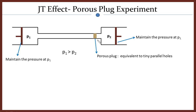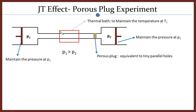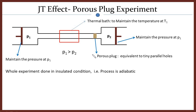Another requirement for this experiment is that we need to maintain the temperature of the gas in compartment 1. Let us assume that temperature is maintained at T1 with the help of a thermal bath. The temperature here is T1 and pressure is P1; in the other compartment the pressure is P2. Also, the arrangements are made such that there is no exchange of heat between system and surroundings — the whole experiment is done under insulated conditions. This porous plug experiment is conducted under adiabatic conditions, which means dQ equals zero.